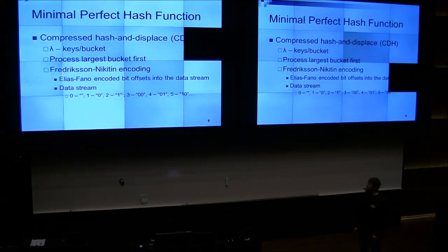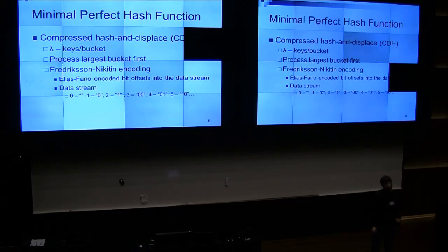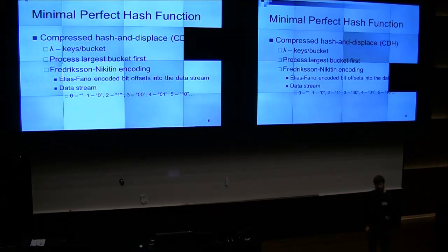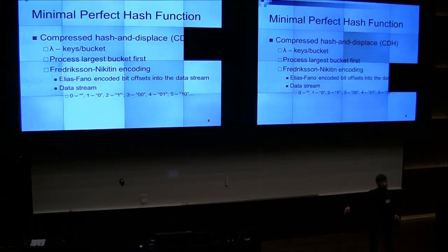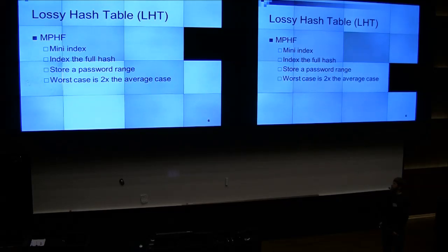Each of the buckets, in their original order, you store the hash function ID — basically how many you had to try — in Elias-Fano encoded bit offsets. Each bucket number is encoded such that if the first hash function worked, you store nothing. If it was the first one, you store a single bit of zero. If it was the second, a single bit of one. Then you have offsets stored as a sorted list of numbers encoded as Elias-Fano, which is a very effective method of doing that.